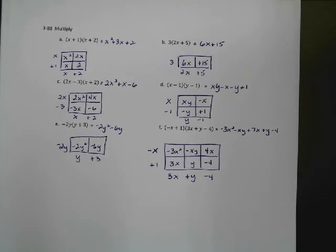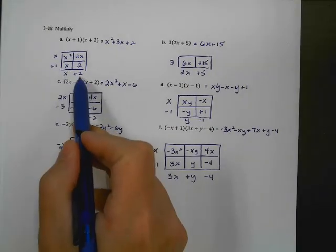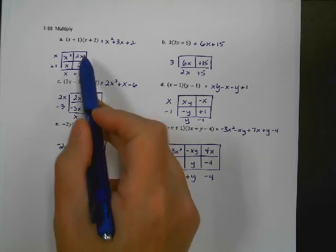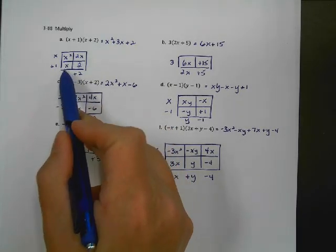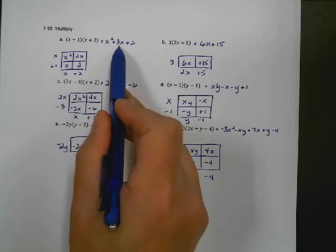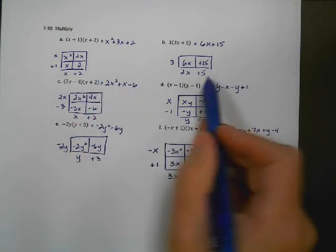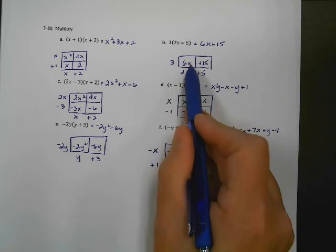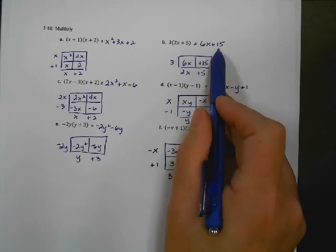All right, here are our answers. First one: X plus 1 times X plus 2. We get X squared, then X plus 2X — those are like terms — so 3X, plus 2. Final answer: X squared plus 3X plus 2. Second one: monomial times binomial, so 3 times 2X is 6X, and 3 times 5 is 15 — nothing's like terms. Answer: 6X plus 15.